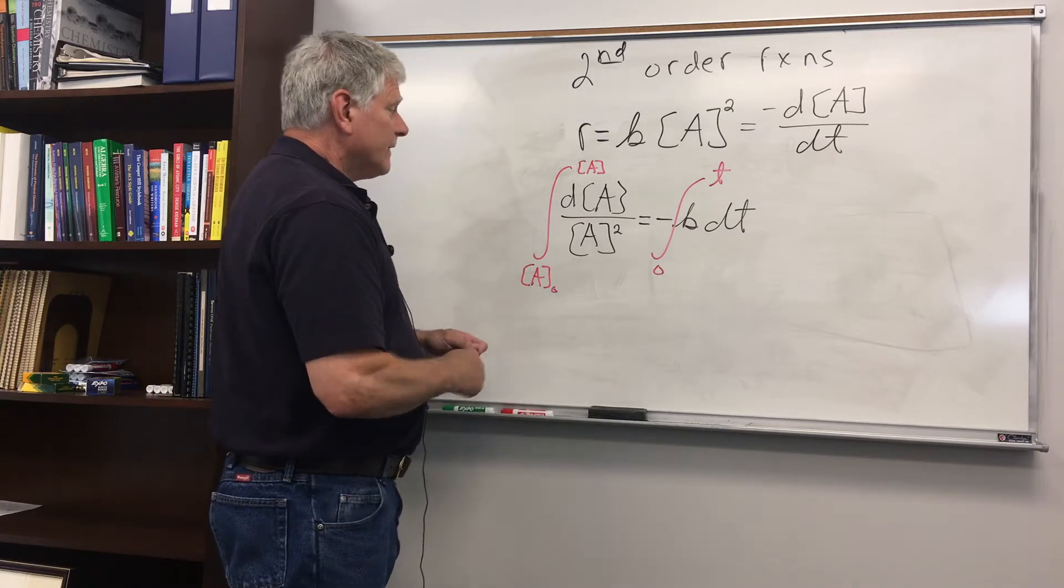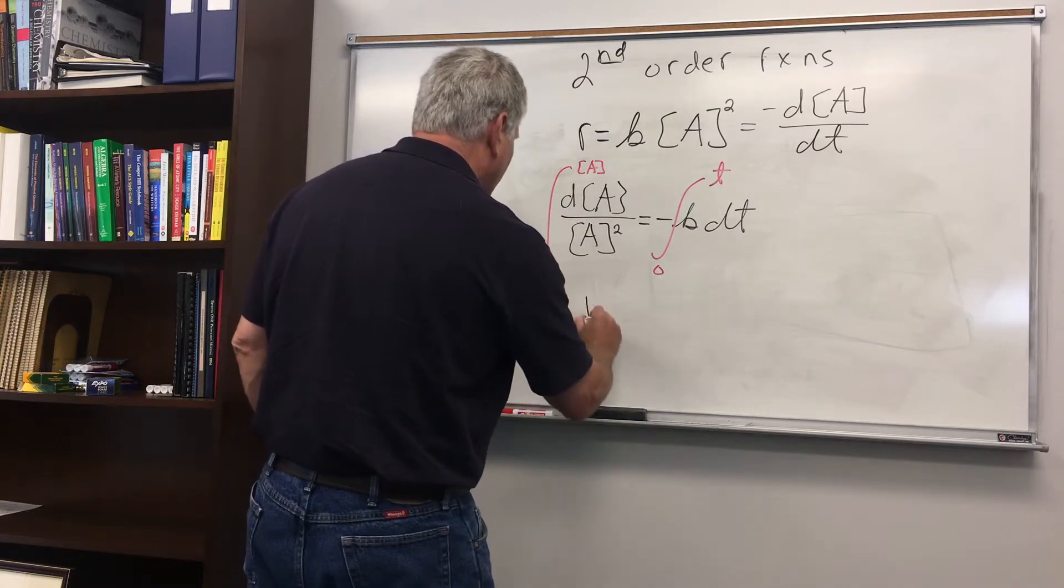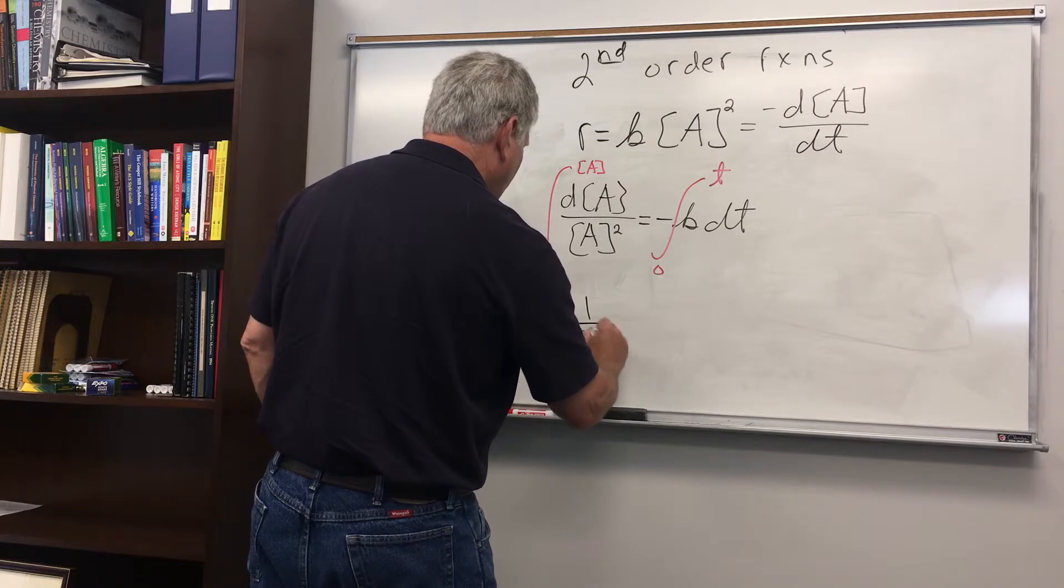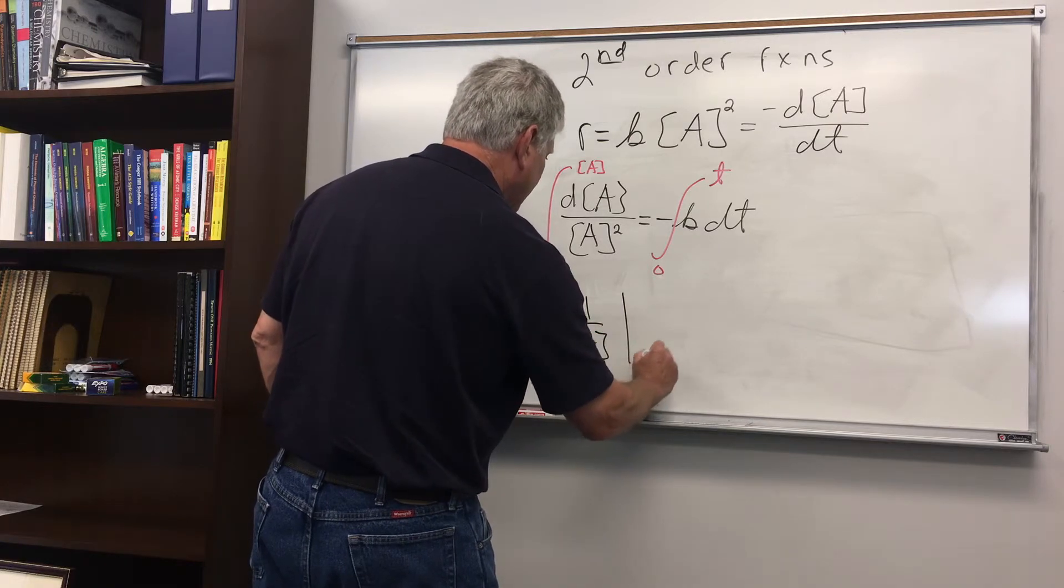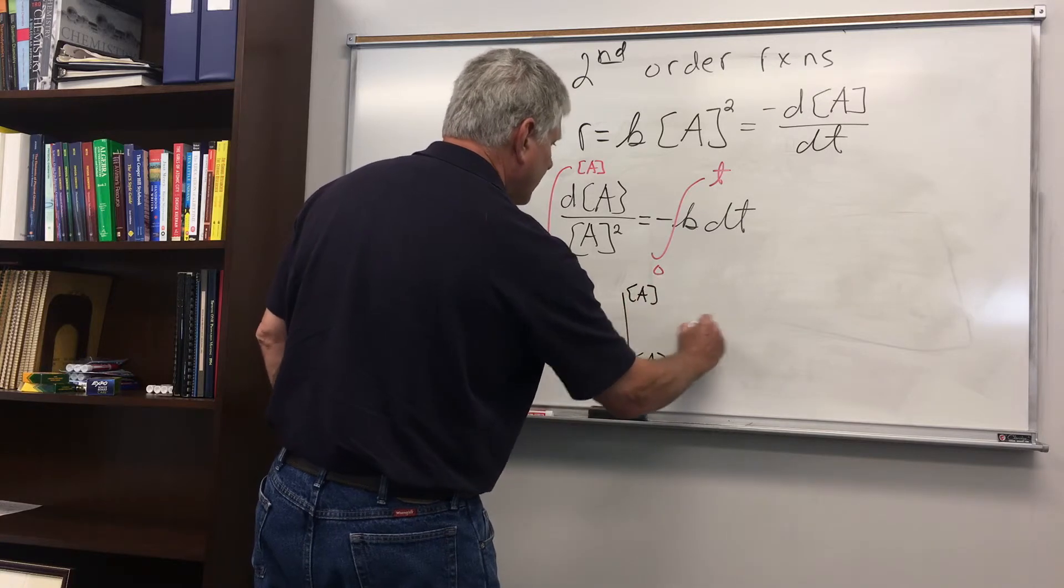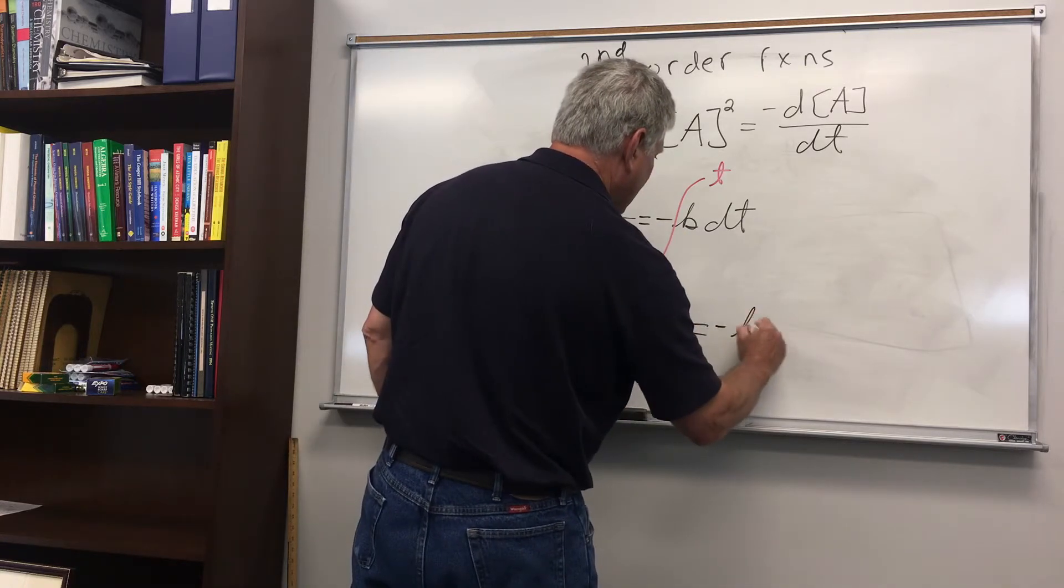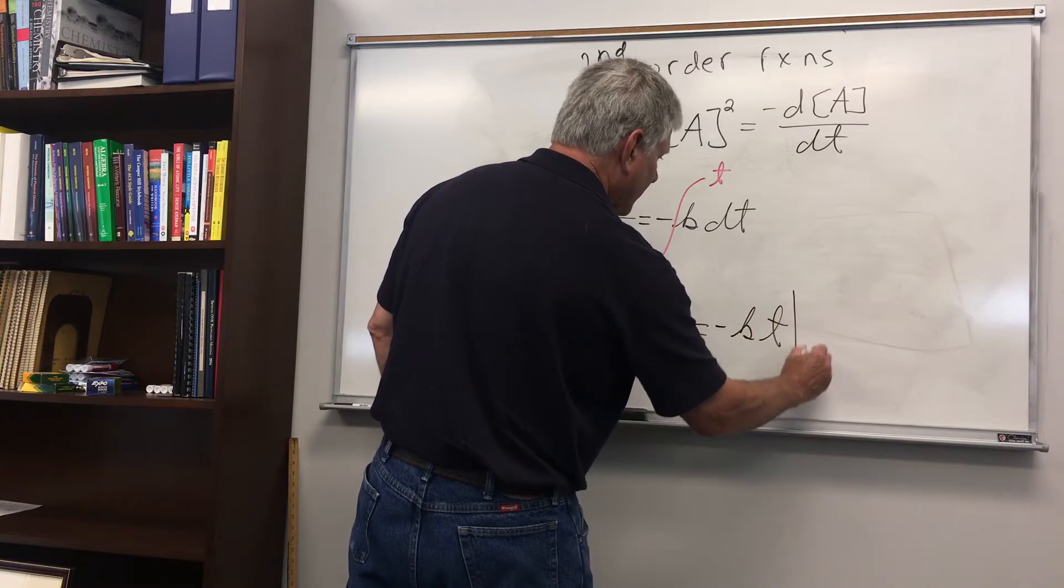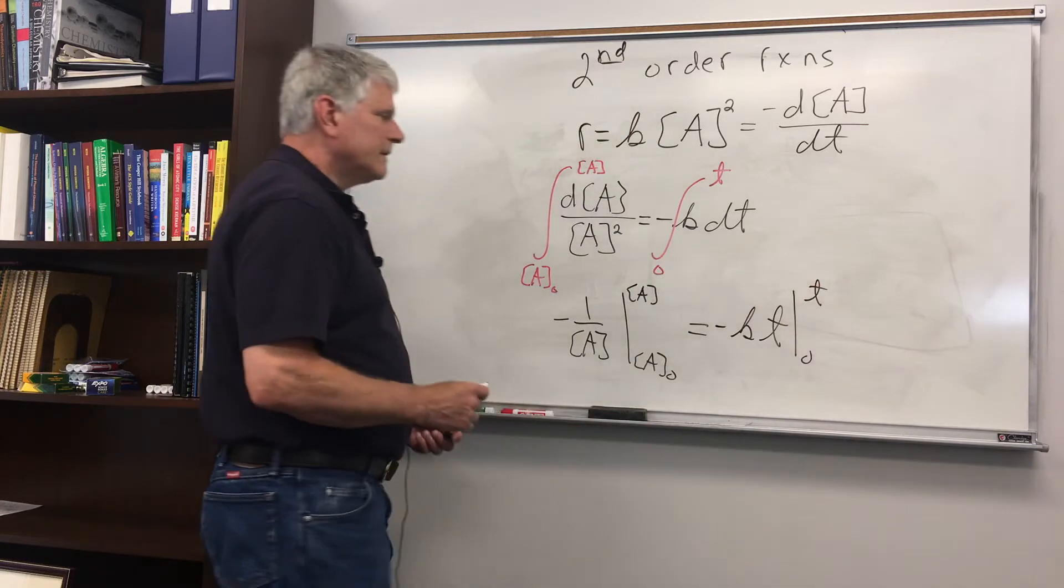Now this integral is going to be equal to negative 1 over concentration of A evaluated at A naught to A and this is equal to minus k t evaluated from 0 to t.